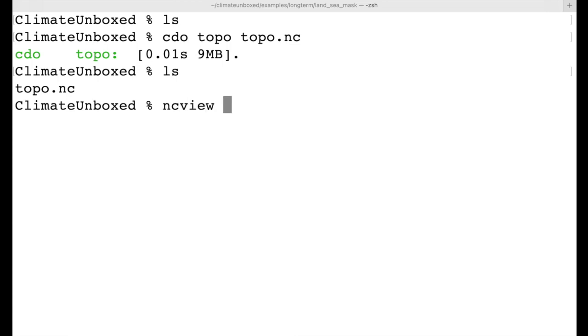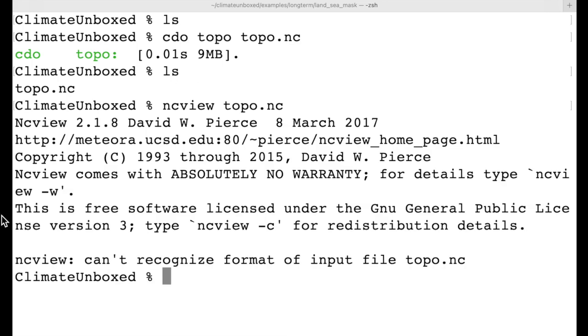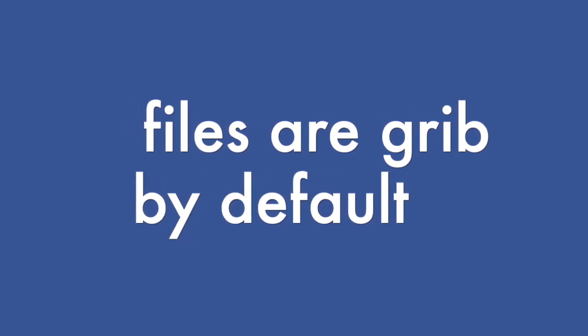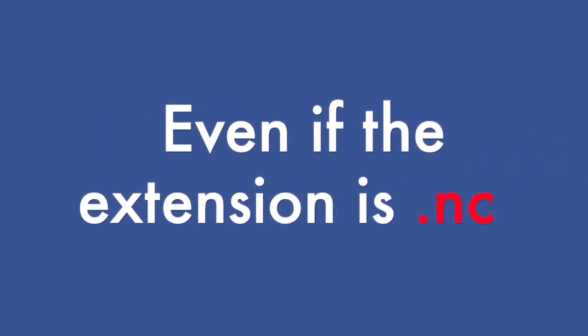But when we try and open this with ncview, we get this error message. ncview can't recognize format of input file topo.nc. And the reason for this is that CDO produces GRIB by default, irrespective of the file extension.